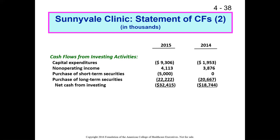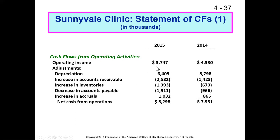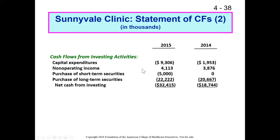Now we'll look at investing activities. Unlike cash flows from operating activities, there isn't a starting point like operating income here — there aren't adjustments per se. These are all direct changes as a result of investing activities.